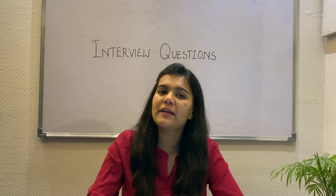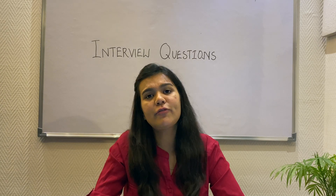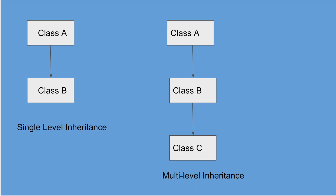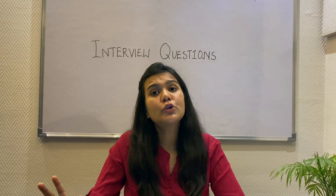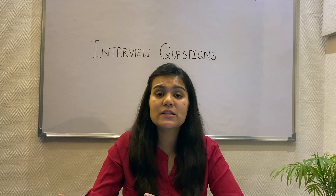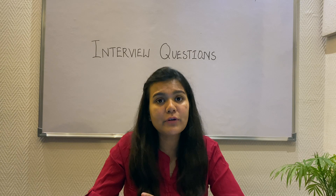First, let's understand the different types of inheritance: single inheritance, in which a derived class inherits the properties and behaviors of its parent class; multi-level inheritance, in which a child class is again inherited by another child class, creating a hierarchy; and then multiple inheritance, in which a derived class extends from two different base classes.